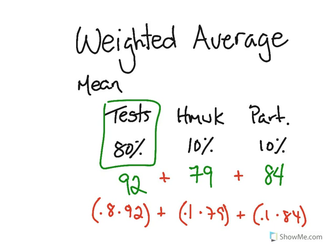So let's do that. As you can see I've written out here we have each of the different values: 80% times 92, 10% times 79, and 10% times 84. All you have to do now is plug it into the calculator and solve and you'll get your answer. So go ahead and try doing that.